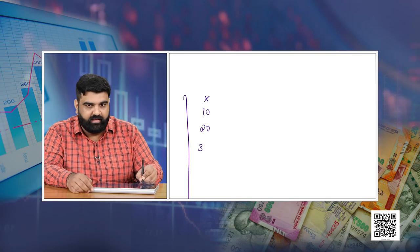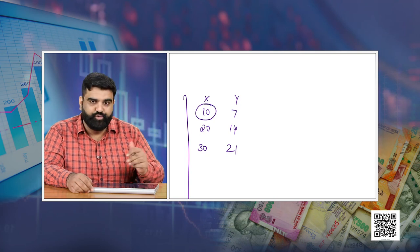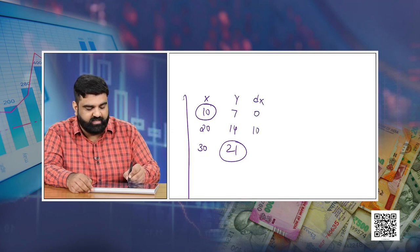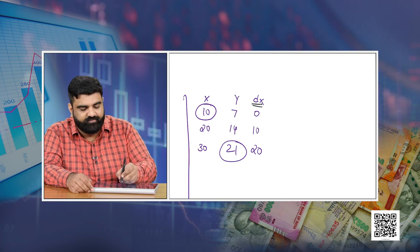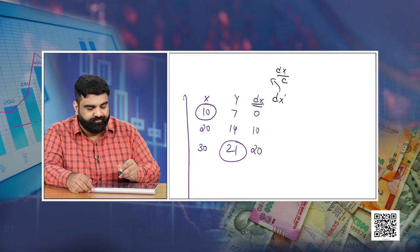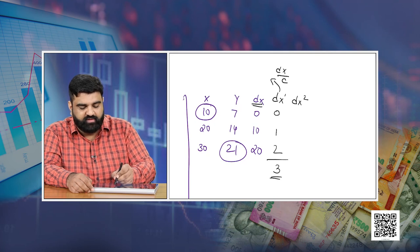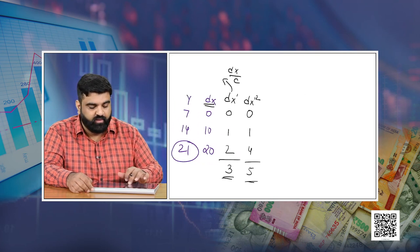Now let us solve the same question using the step deviation method. We have x as 10, 20, 30 and y as 7, 14, 21, with assumed means of 10 and 21 respectively. dx gives 0, 10, and 20. We can pull out a common factor of 10, so dx-dash becomes 0, 1, and 2, totalling 3. dx-dash squared gives 0, 1, and 4, totalling 5. For dy we get minus 14, minus 7, and 0. Pulling out a common factor of 7 gives dy-dash as minus 2, minus 1, and 0, totalling minus 3. dy-dash squared gives 4, 1, and 0, totalling 5.